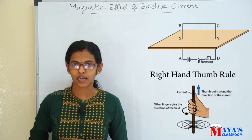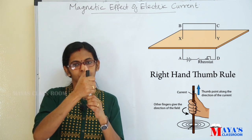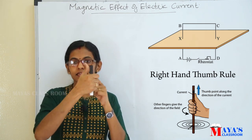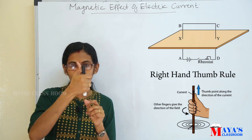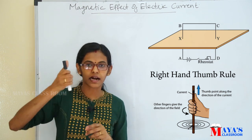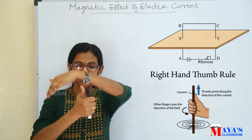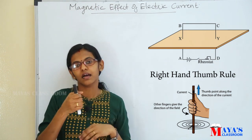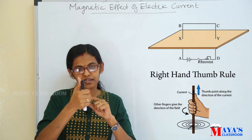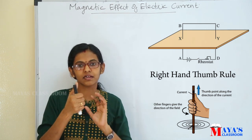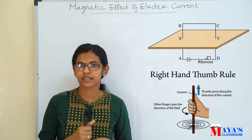That rule means that we have a straight conductor. If you hold the conductor with your right hand, the thumb indicates the direction of the current flow. The other fingers encircle the conductor and indicate the direction of the magnetic field. This anti-clockwise direction of the fingers gives the magnetic field direction. That is James Clark Maxwell's right-hand thumb rule.